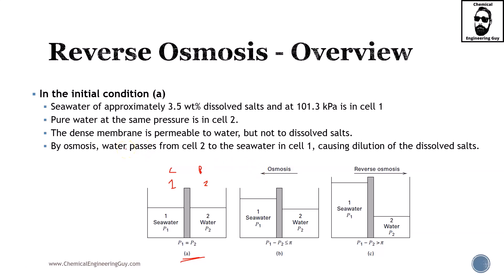By osmosis, water passes from cell 2 to the seawater in cell 1, causing dilution of the dissolved salts. This happens because pure water has roughly zero percent salt and seawater has 3.5%. According to natural osmosis, since the ions cannot distribute evenly, the solvent is the only permeable species and moves toward the left, increasing the level and trying to reach a concentration somewhere between 0 and 3.5%.